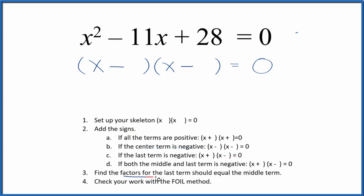Next, we want to find the factors for the last term, this 28, and they should add up to the middle term. So let's write the factors for 28. And I can see that 4 times 7, that's 28. 4 plus 7, that gives me 11. So I'm going to put a 4 here, a 7 here, and we're done.